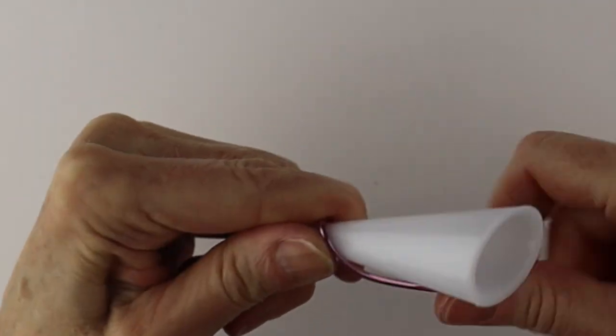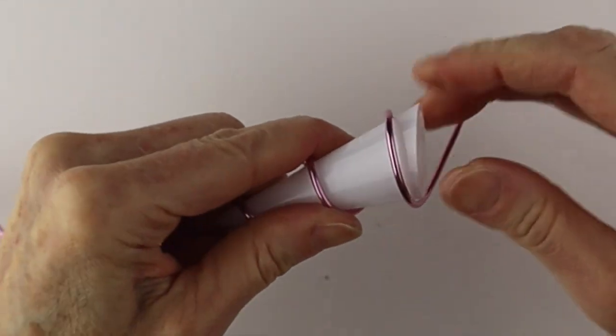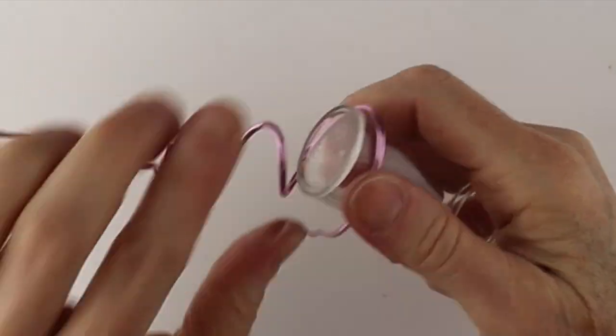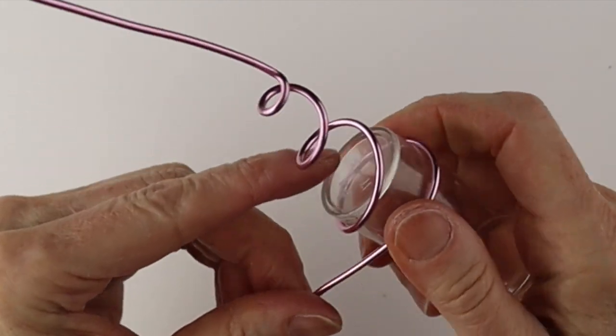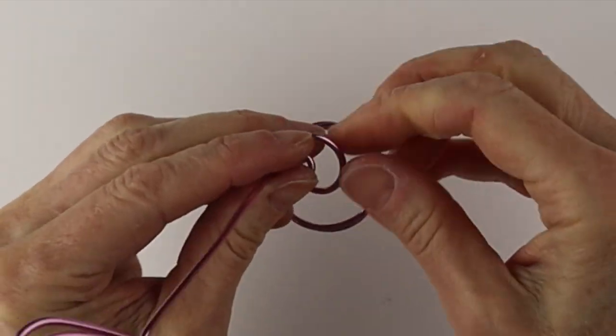So just hold it firmly. Bring the wire around. Remove the cone. Put a larger round form if you want it larger. It's probably better to do a wider base so it'll be balanced.